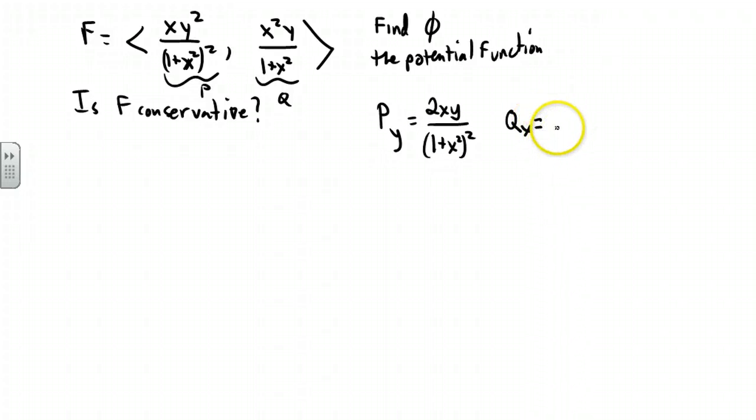Now qx requires the quotient rule. We have to take the denominator and square it, and then we have to take the derivative.